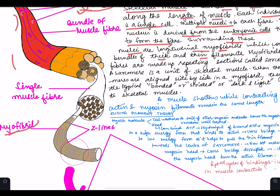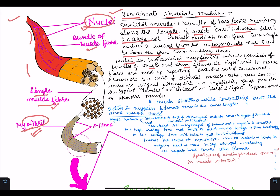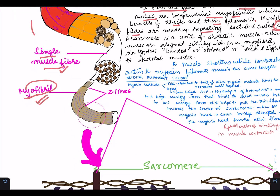Here we can see a single myofibril out of this bundle of muscle fibers. We have a single muscle fiber, and out of this single muscle fiber we have this myofibril which we have enlarged. You should not confuse between what is a muscle fiber, what are muscles, and what is a myofibril. Myofibrils in muscle fibers are made up of repeating sections called sarcomeres.